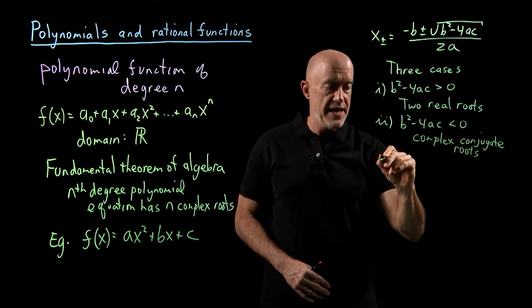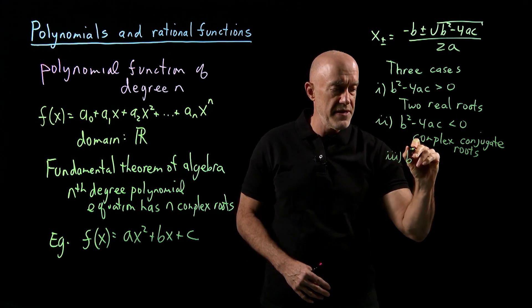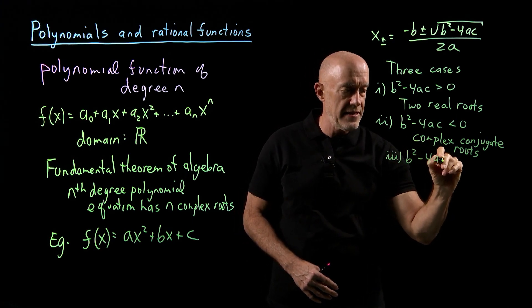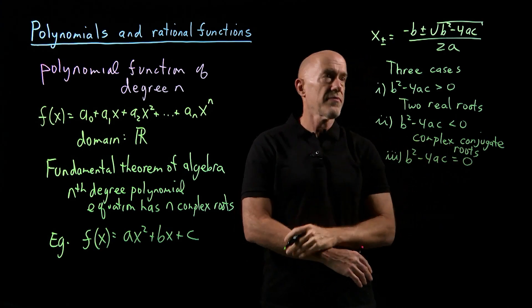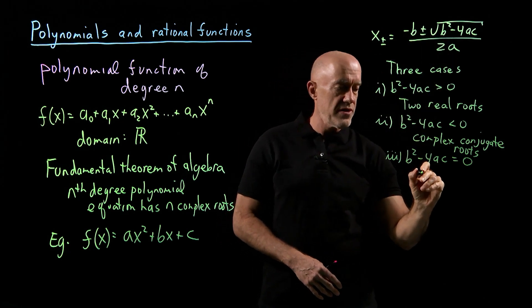Then there's the third case. The third case is when b² minus 4ac equals zero. In that case there's only one root, one real root.